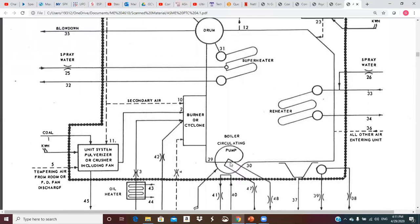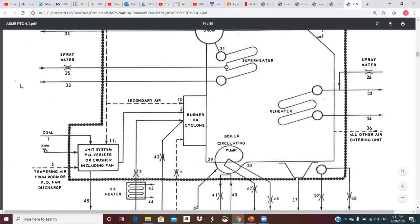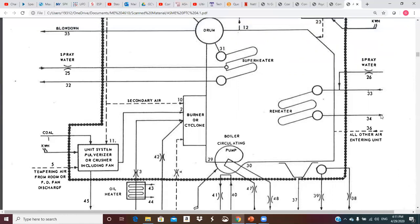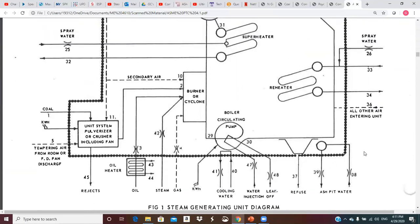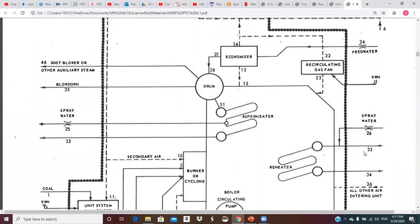So here is our reheat steam. So that steam goes out over here, goes through the high pressure turbine, comes out of the high pressure turbine, comes back over here for reheating. We have an attemperator here where we can spray into the cold reheat line. We go through the reheat superheater and then back out to the IP and LP turbines. Got a note here, 36, all other air entering the unit. Now we can look at the flue gas flow.